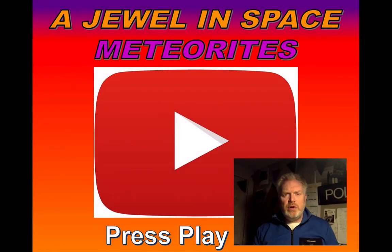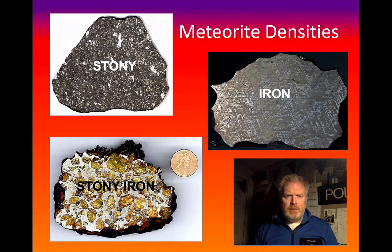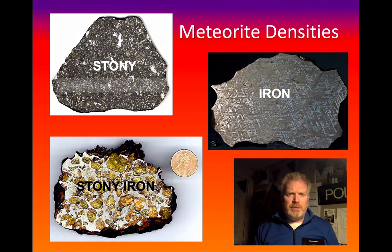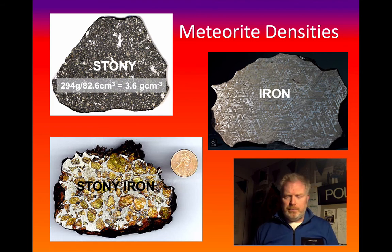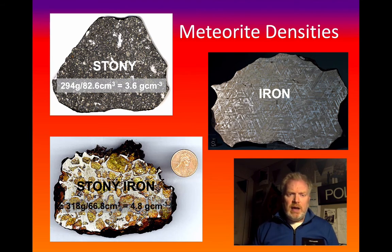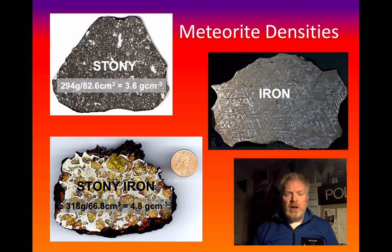Let's see what you've come up with. Starting with the stony meteorite: there's a mass of 294 grams and a volume of 82.6 cubic centimetres, which gives us a density of 3.6 grams per cubic centimetre. The stony-iron meteorite has a mass of 318 grams and a volume of 6.8 cubic centimetres, giving us a density of 4.8 grams per cubic centimetre.